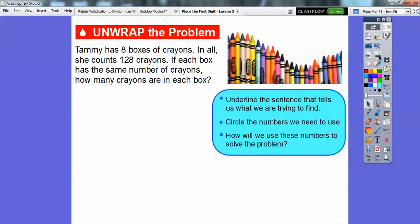Let's underline the sentence that tells us what we're trying to find, and we'll circle the numbers we're going to use. We're going to use these two numbers right here, and here's the question right here. How many crayons are in each box? And so how are we going to solve this problem? We're going to take those two numbers and divide. We're going to divide 128 divided by 8.